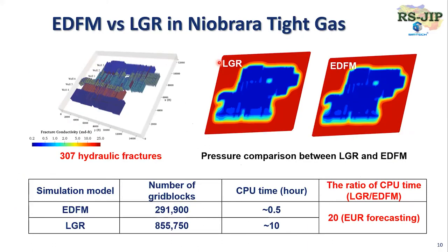We did a lot of benchmarking. I show one case in the Niobrara tight gas work with a wire operator. You can see we have multiple wells including about more than 300 hydraulic fractures using simple planar fractures with the LGR method. After comparison, we found EDFM can get similar results compared to the LGR method, but EDFM can be 20 times faster. The LGR runs a single case in around 10 hours — about one day — while EDFM is only about 30 minutes.